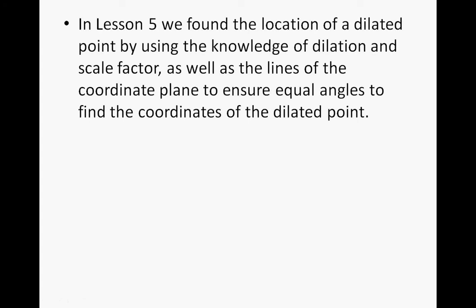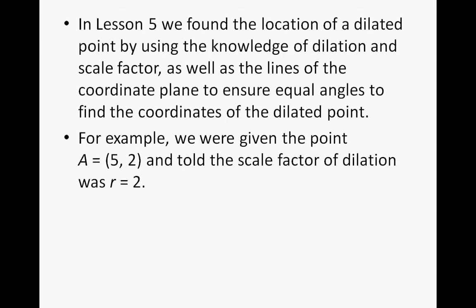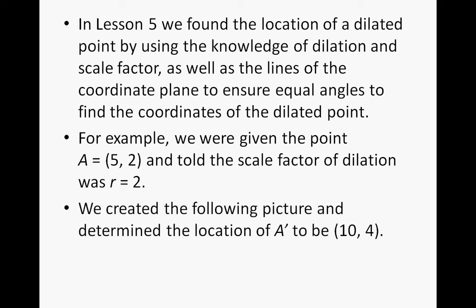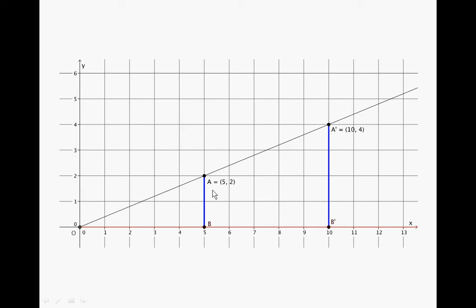In Lesson 5, we found the location of a dilated point using the knowledge of dilation and scale factor, along with the lines of the coordinate plane to ensure equal angles. For example, we were given point A at (5, 2) and told the scale factor was r equals 2. Without even having a graph, if the scale factor is 2, the dilation is going to magnify and move our point further from 0. We determined the location of A prime to be (10, 4).